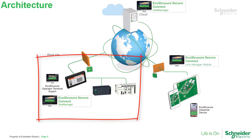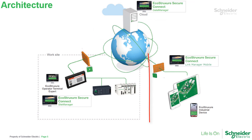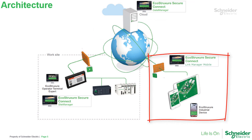For that, we need one HMI configured with EcoStruxure Operator Terminal Expert, with the options Web Viewer and EcoStruxure Secure Connect activated, and connected to internet. A gate manager with the right access created, and a mobile device such as a tablet or smartphone with Industrial Device installed.